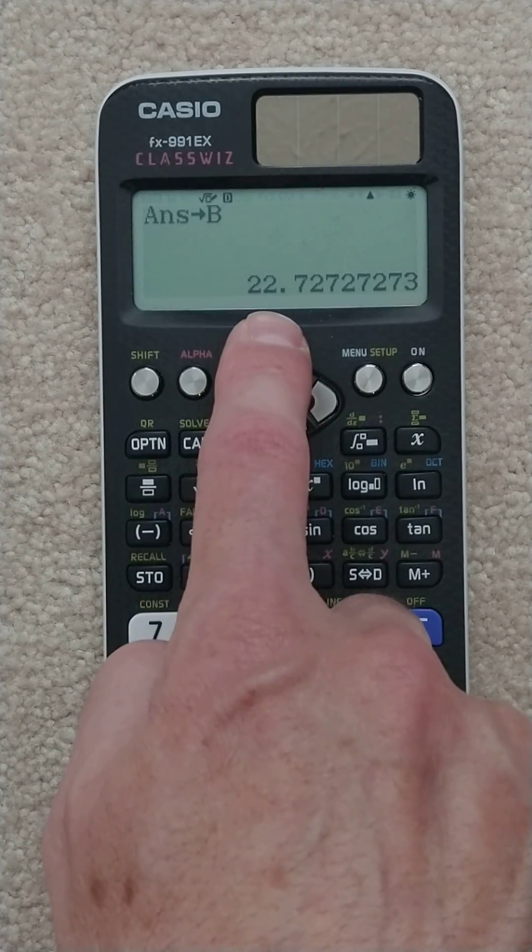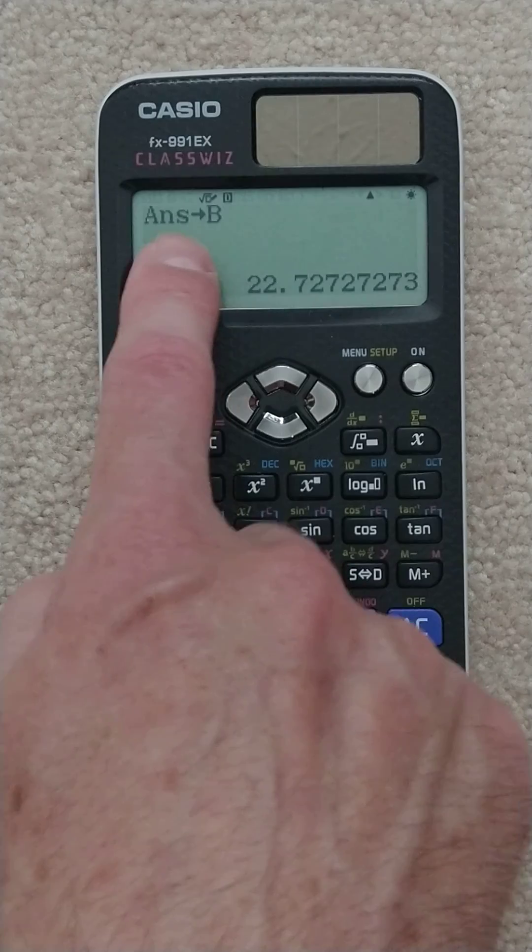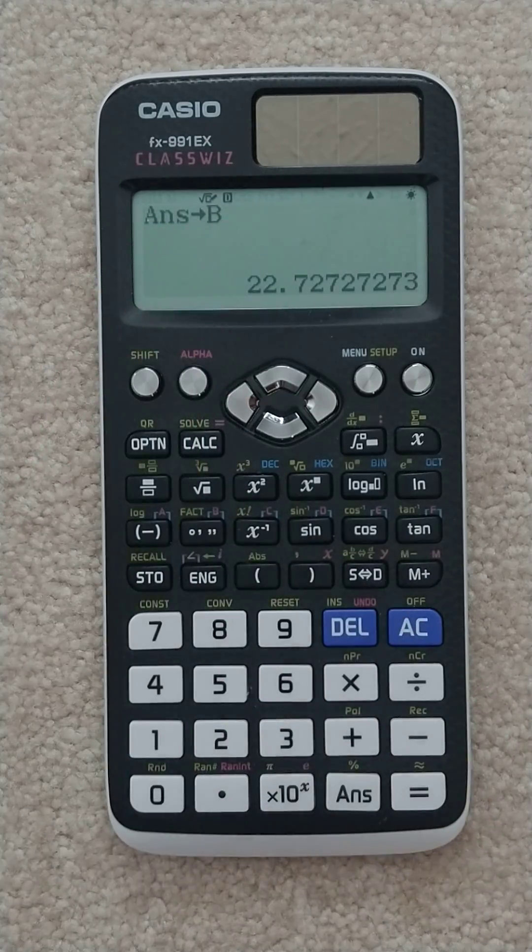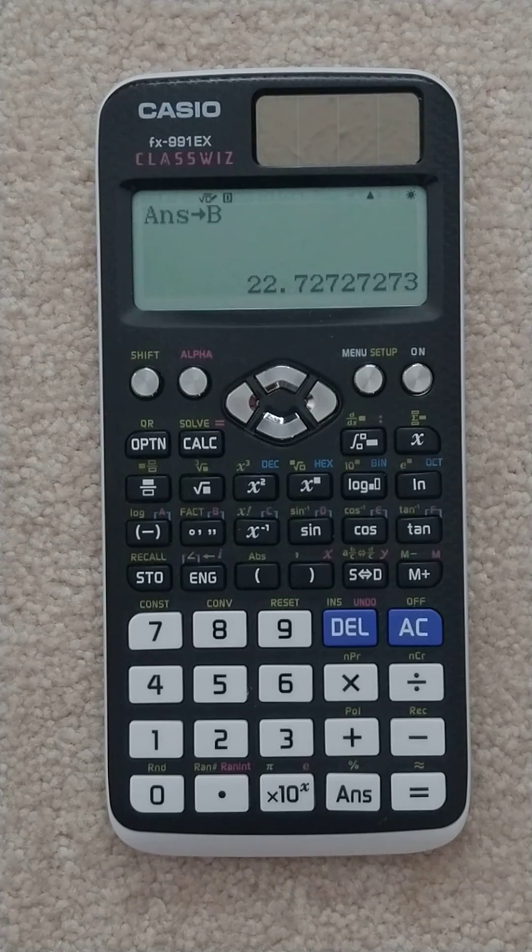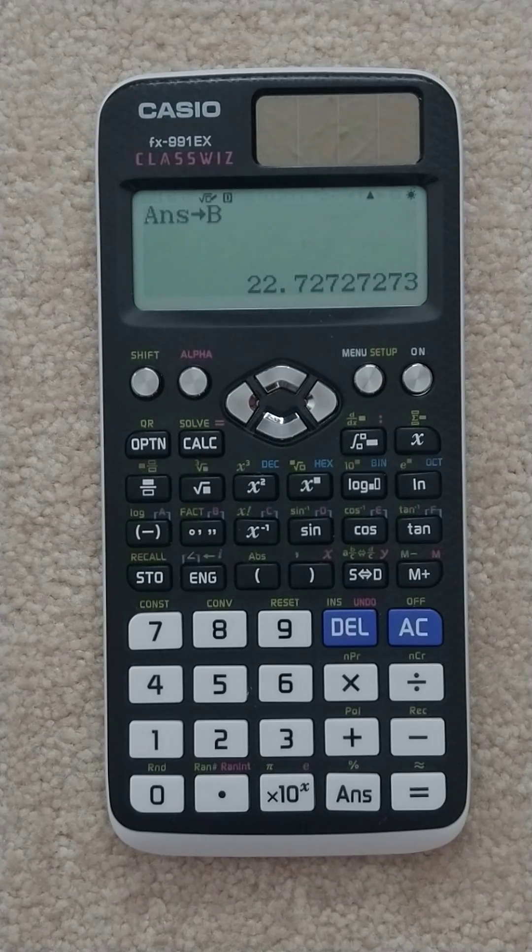It didn't actually store what I wanted it to store. It stored the answer, which was the most recent calculation or result. And that stinks. I know of no way to grab that previous calculation and use it. So I consider that a definite weakness of the Casio.